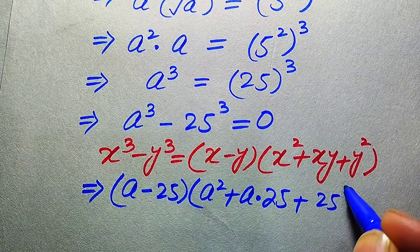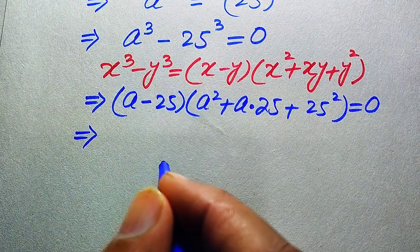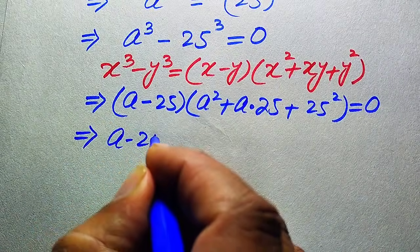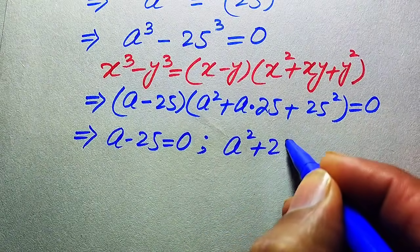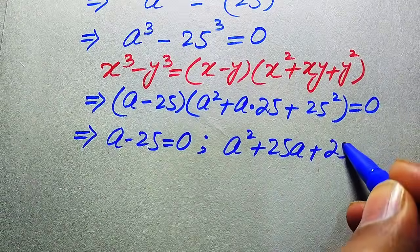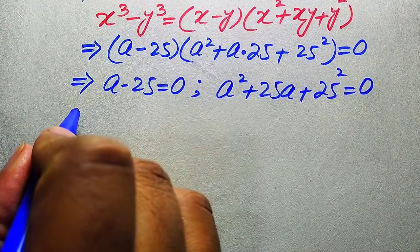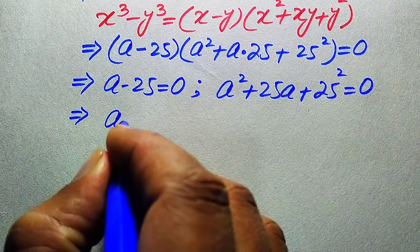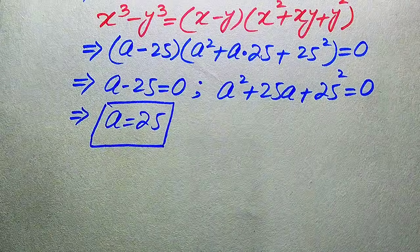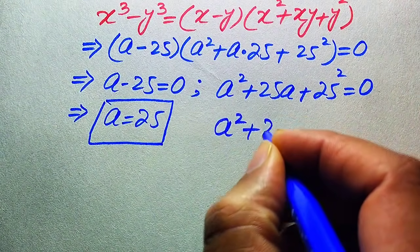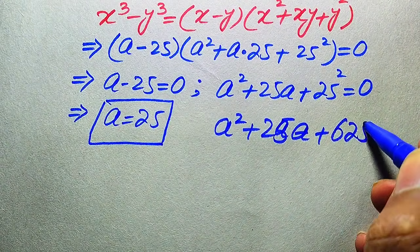We divide this equation into two cases. The first case is a minus 25 equals zero, and the second case is a² plus 25a plus 25² equals zero. For the first case, moving minus 25 to the right hand side gives a equals 25, which is the first real root of the given equation.